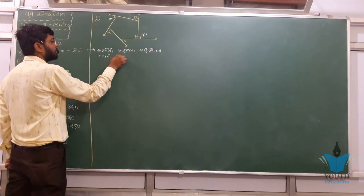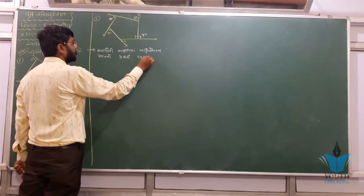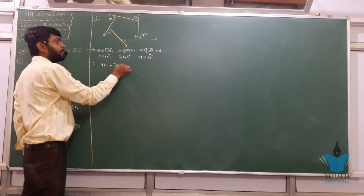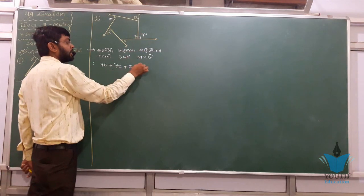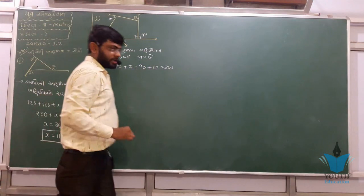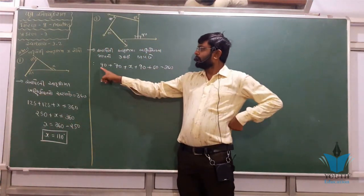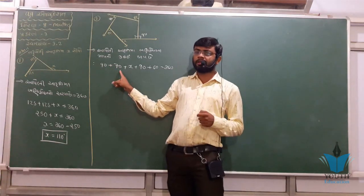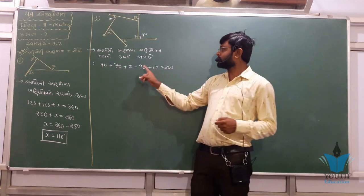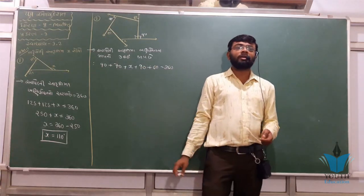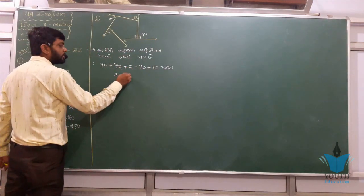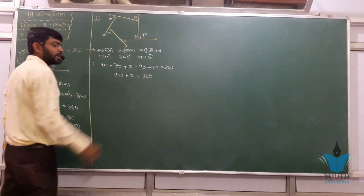360° ને 70 ઠાય 6 — પહેલો ખૂણો 9, પ્લસ 90, પ્લસ x, પ્લસ બ્લો સાઈ બરાબર 360°. 9 બ્ચાસ x ને સાઈ x — 90 માંથી x બ્ચાસ. x ને 310 — x plus 310, x is equal to 310.